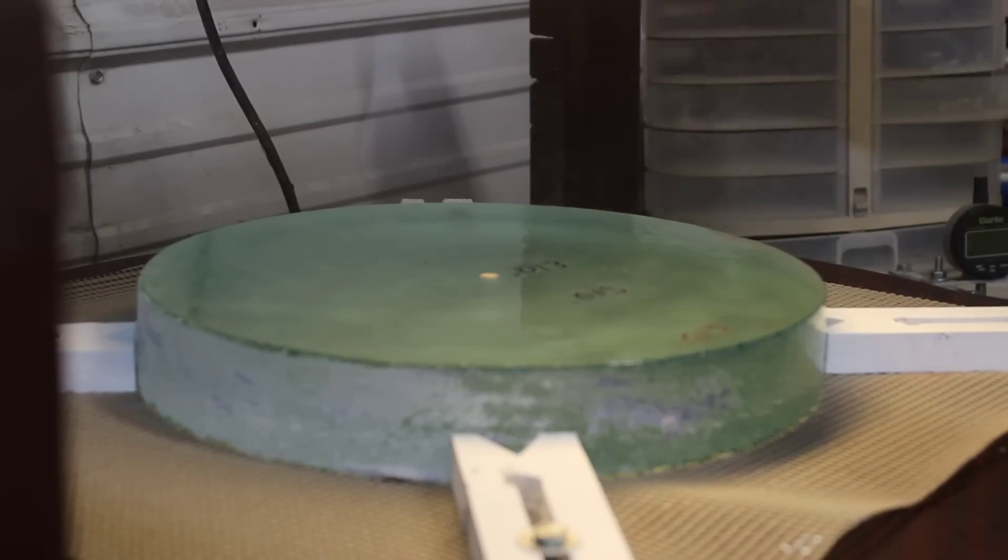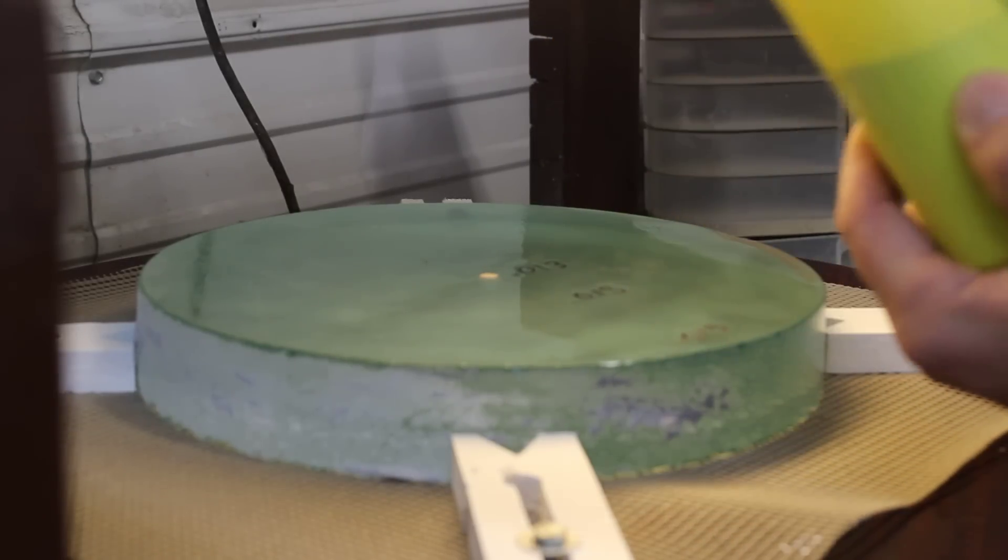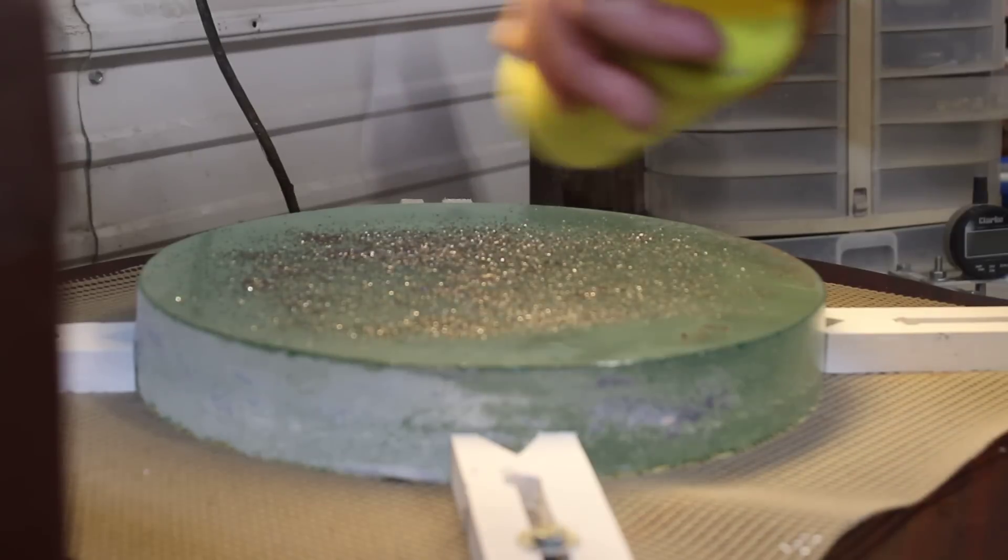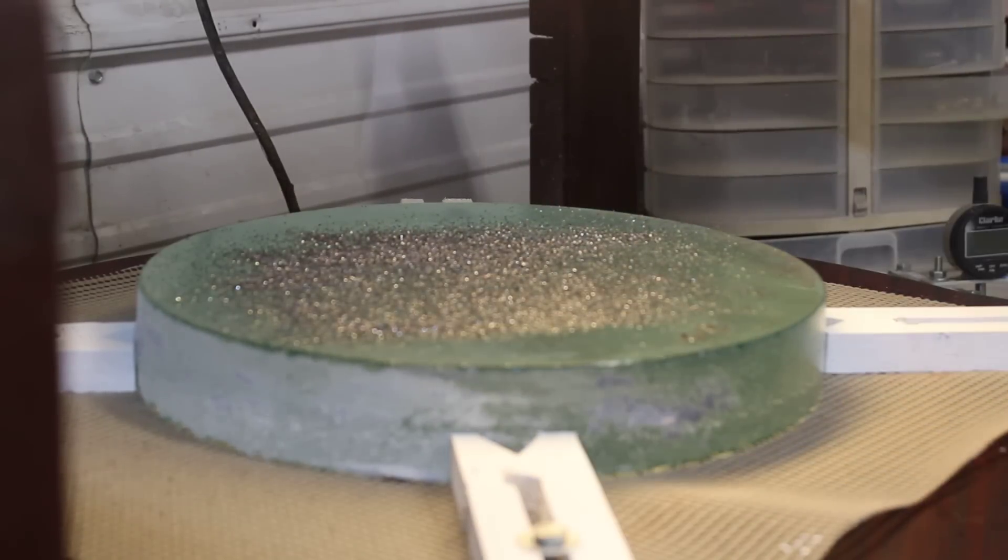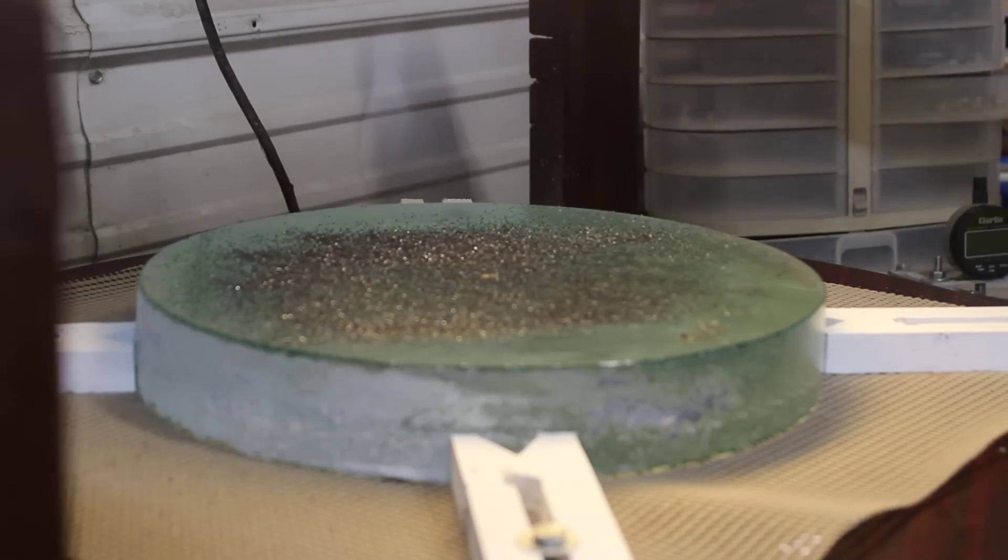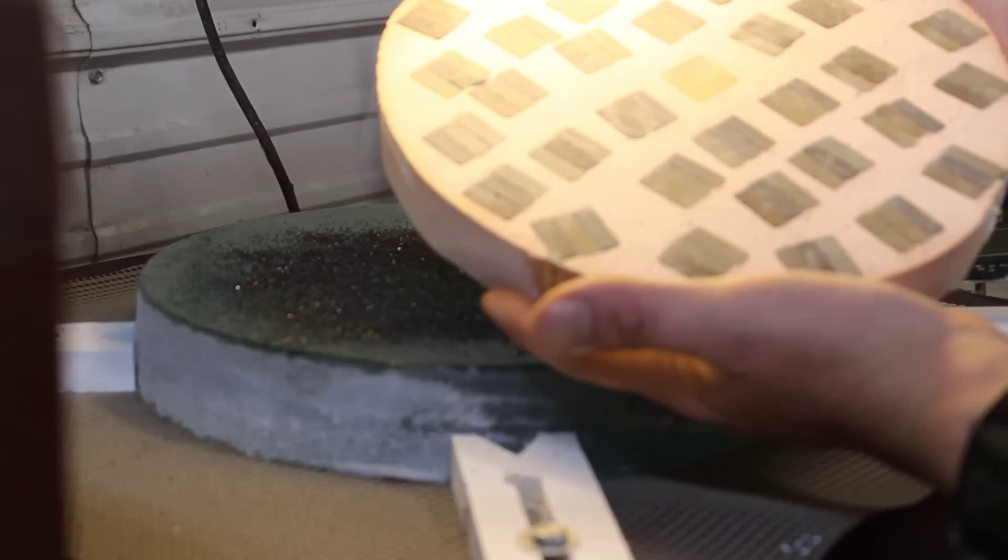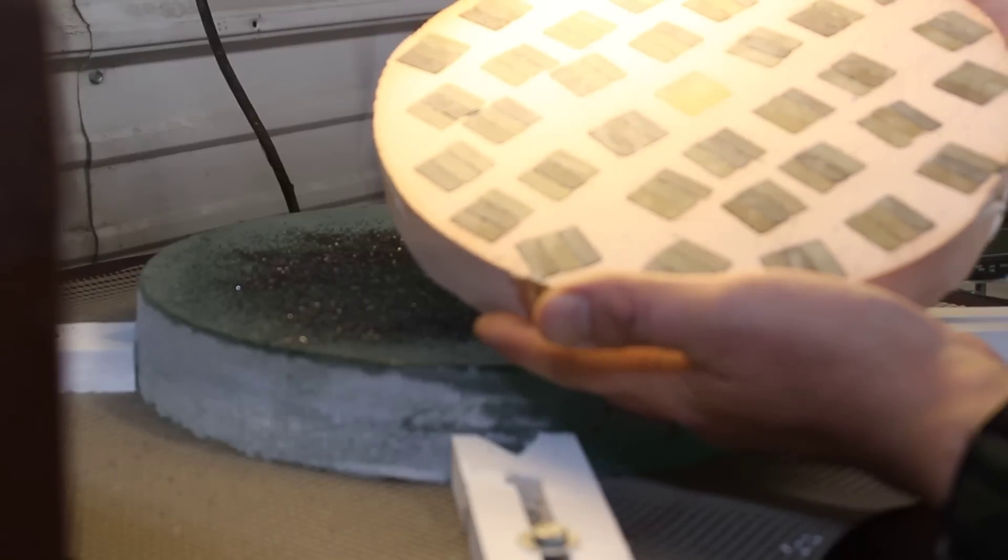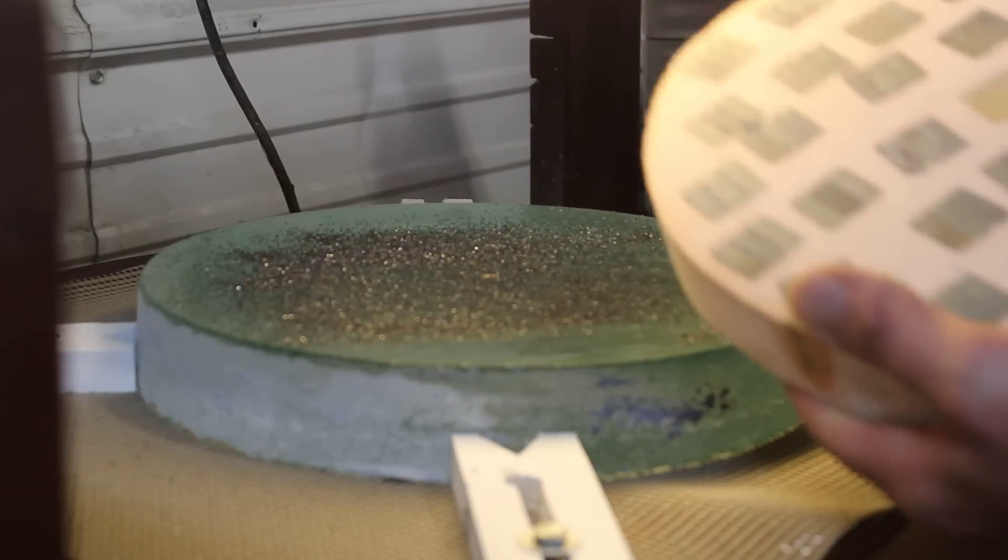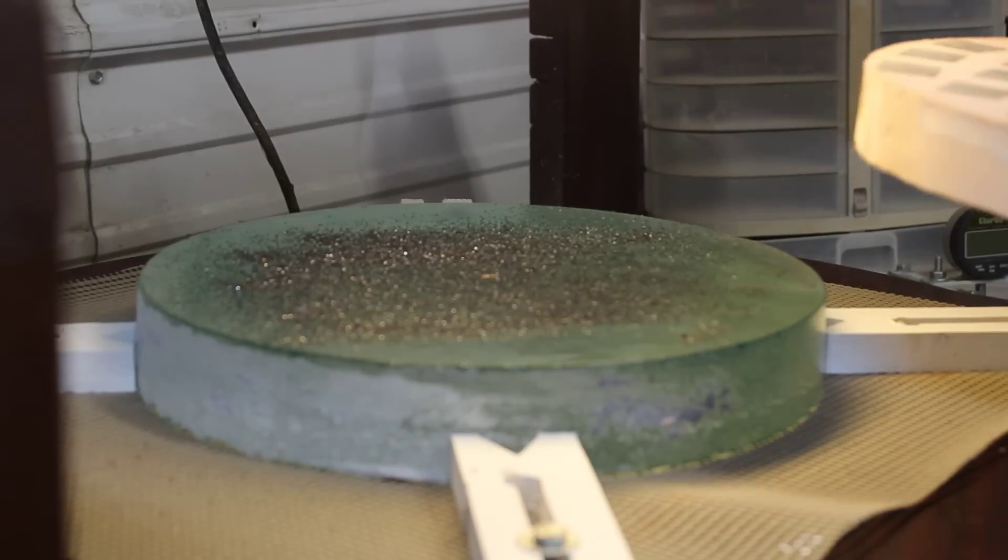First thing I usually do is I'll wet the mirror down. Right now I'm just using regular tap water. When I get into the polishing stages and finer grinding, I do use distilled water. I've got a little mustard bottle right here with some 36 grit abrasive. This goes all over the mirror - maybe a teaspoon, teaspoon and a half. I like to make sure that's wet too. Then I've got the dental plaster and tile tool. I'm just going to wet the tool down.